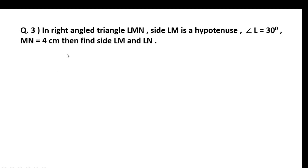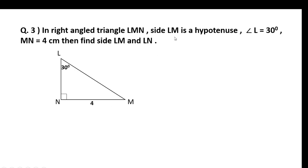Question 3 — I will give you hints. In right-angle triangle LMN, LM is the hypotenuse, angle L is 30 degrees, MN is 4 cm; find side LM and LN. Draw triangle LMN: LM is the hypotenuse, angle L is 30°, right angle at M, so the remaining angle N is 60°. MN is opposite the 30-degree angle. Using the formula MN equals half into LM: 4 equals half into LM, therefore LM equals 4 × 2 equals 8.